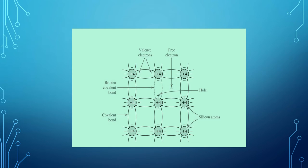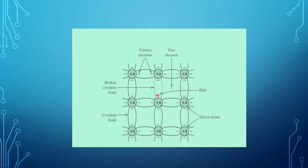In this slide, we understand the concept of intrinsic carriers. A covalent bond is a stronger bond between the valence electrons and their parent atoms. A valence electron can absorb sufficient kinetic energy from an external source and break the covalent bond. This is called the broken covalent bond, and when the covalent bond is broken, a free electron is generated. This free electron generation is called the intrinsic carrier in the semiconductor structure.